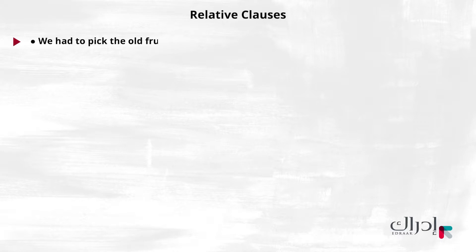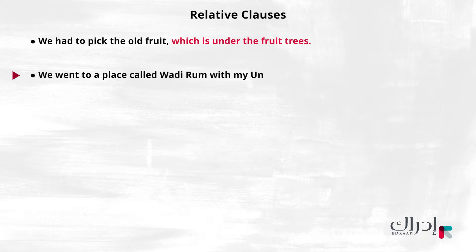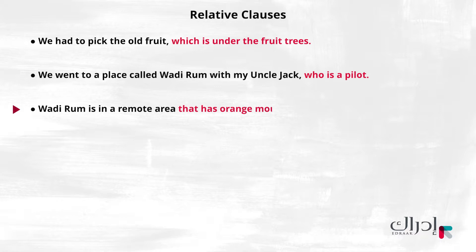Let's look at these sentences again. 'We had to pick the old fruit, which is under the fruit trees.' 'We went to a place called Wadi Ram with my uncle, who is a pilot.' 'Wadi Ram is in a remote area that has orange mountains.' Sometimes, we add additional information to the sentence using AND. When the information is conflicting, we use BUT.